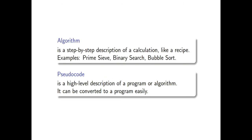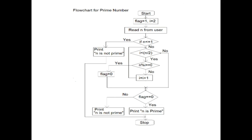An algorithm is a step-by-step description of a calculation or solution of a problem. Now we have a definition called pseudocode. We have been talking about writing algorithms, but I haven't told you how to write one yet — whether in some other language, mathematics, English, Hindi, or a computer language.